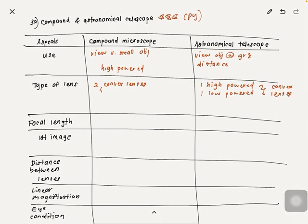For the compound microscope, the focal length of the objective lens is smaller than the focal length of the eyepiece. For the astronomical telescope, the focal length of the objective lens is longer than the focal length of the eyepiece — fo stands for focal length of objective lens and fe for focal length of eyepiece. The first image formed in a compound microscope is real, inverted, and magnified.